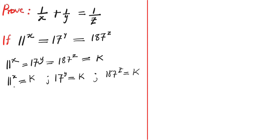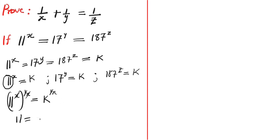After doing this, the next step is to make 11 the subject. So we have 11 power x multiplied by 1 over x equals to k multiplied by 1 over x. The x here will cancel x, so we get 11 equals to k power 1 over x.